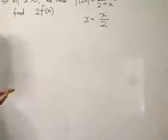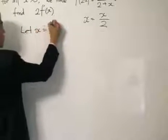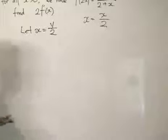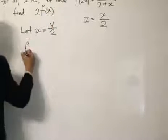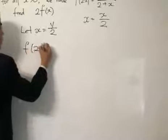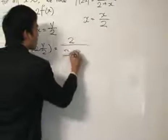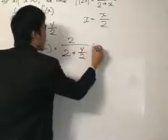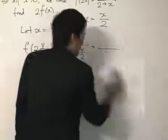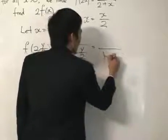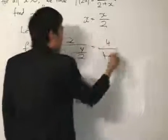So if you want to do the working properly, you let x = y/2—you make a substitution with the variables. Then from here, you can substitute this inside, so it'll be f(2·y/2) = 2/(2+y/2), and then you can simplify the algebra to 4/(4+y) because you multiply the numerator and denominator by 2, then bring the denominator above, so you get 4 over here.